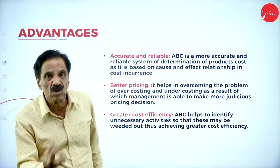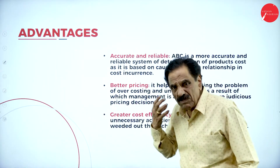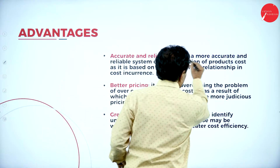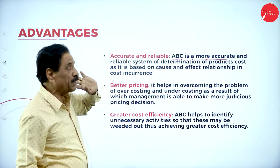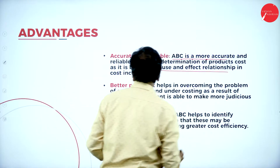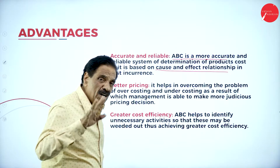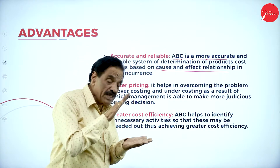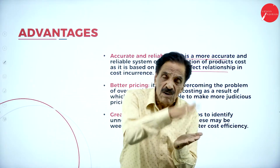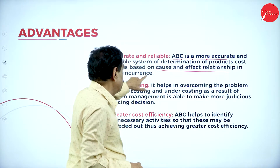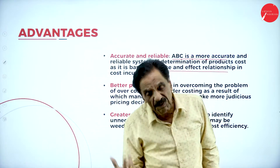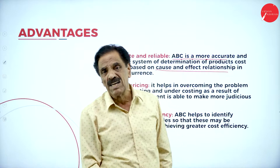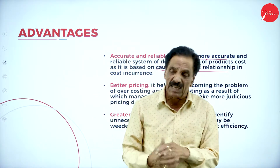The major advantages of ABC: first, it is accurate and reliable. ABC is a more accurate and reliable system for determining product cost, as it is based on cause-and-effect relationships in cost incurrence. It not only identifies the product cost but finds the relationship between causes and effects. Activity Based Costing is definitely a modern technique that gives a good base for costing.